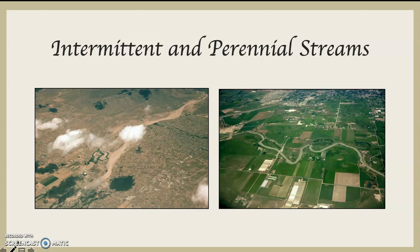There are two quick and easy ways to describe a river system or a stream system, and that is as an intermittent stream or a perennial stream.